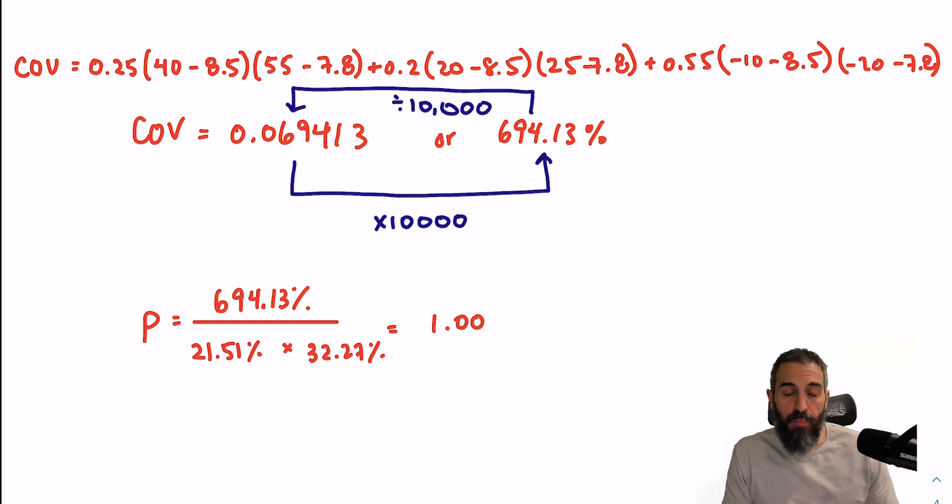Now it's not exactly one because of rounding, but it is actually one if we were to keep all of our decimals. So this tells me that the two stocks are perfectly positively correlated. They always go up and down at the same time.